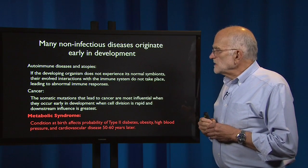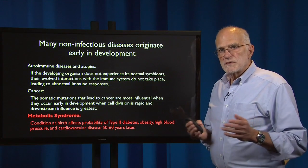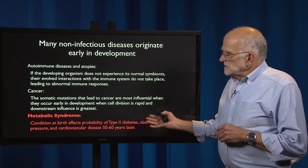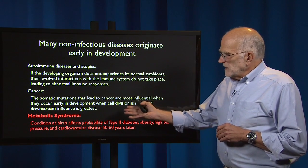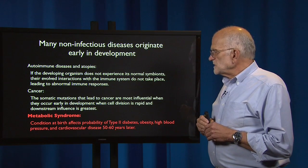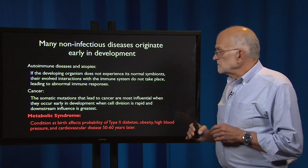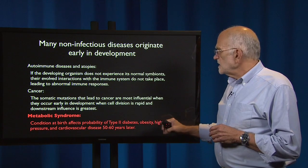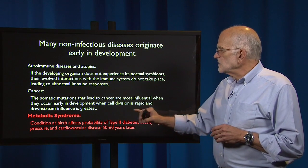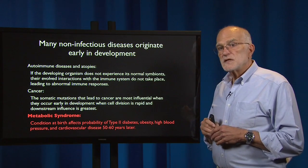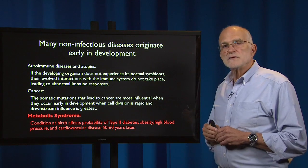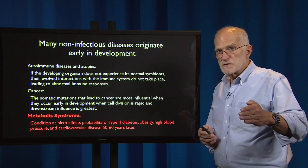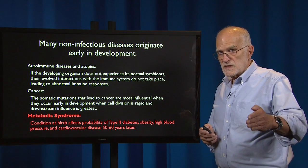The metabolic syndrome basically points out that condition at birth affects the probability, years later, of type 2 diabetes, obesity, high blood pressure, and cardiovascular disease. And this can happen even 50 to 60 years after the initial proximate cause has had its effect.